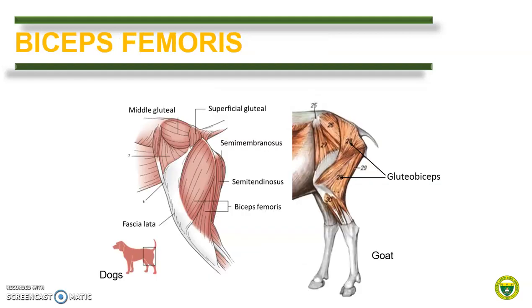The hamstring muscle is composed of three fleshy muscles: the most lateral biceps femoris, the middle semitendinosus, and the most medial semimembranosus muscle. This is true for dogs and for horse. However, in ruminants and in pig, the superficial gluteal muscle is fused with the biceps femoris. In ruminants, like in the case of a goat, the superficial gluteal muscle is fused with the biceps femoris.